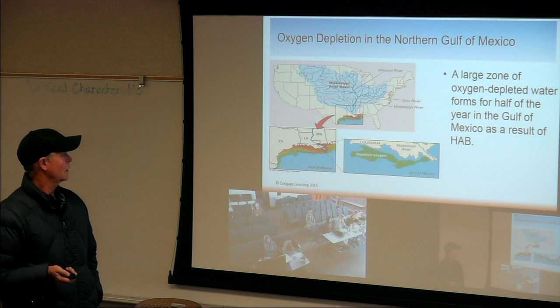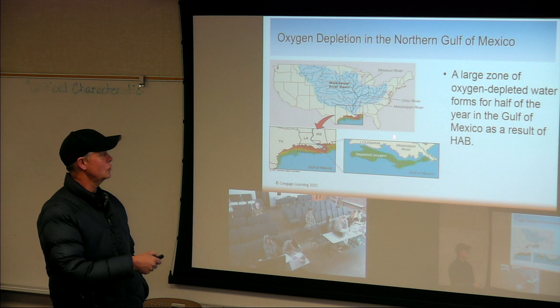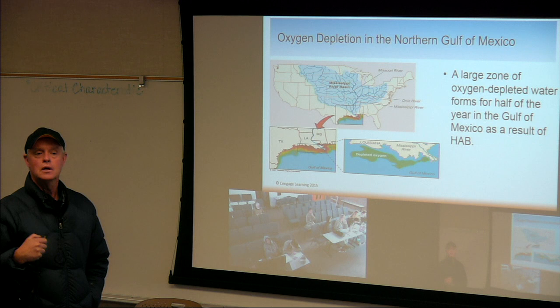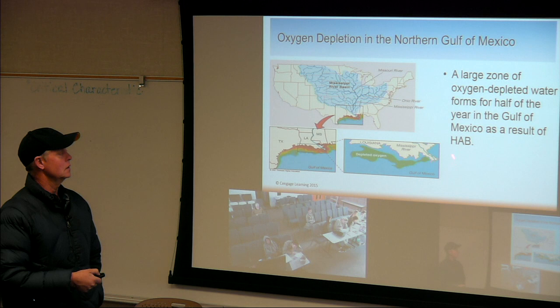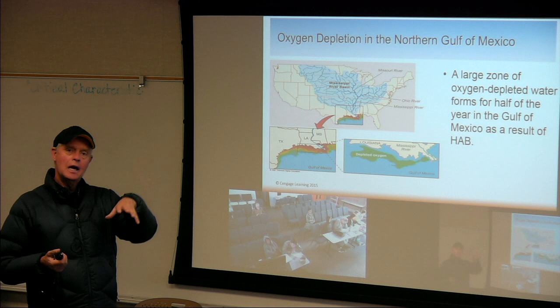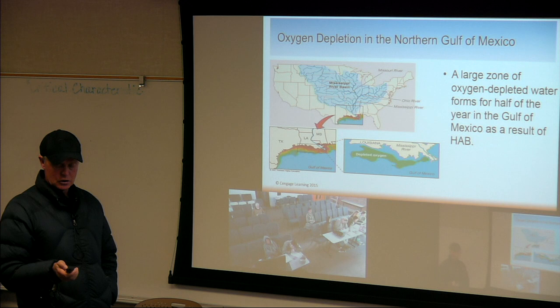There's an oxygen-depleted zone in the Northern Gulf of Mexico — shown in green here — because too many nutrients are coming down the Mississippi River. Could be extra fertilizer or some sewage, depleting oxygen for ocean animals because algae is blooming and causing that dissolved oxygen sag. Fish get their oxygen from dissolved oxygen in the water, so if we put too many nutrients in, we cause that oxygen sag.